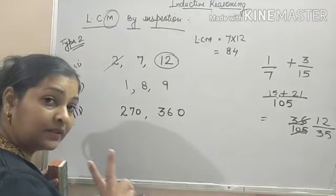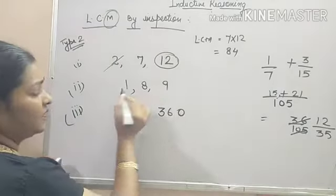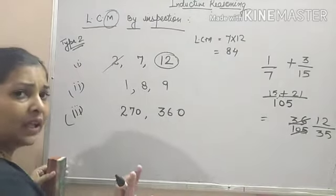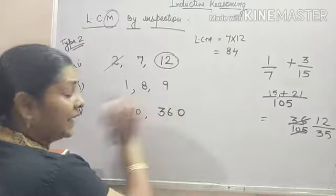If the HCF of 2 number is 1, then they are said to be co-prime. See, 1, 8, 9. 1 is there. There is no need to find the LCM of number because every number is divisible by 1. 8 and 9.